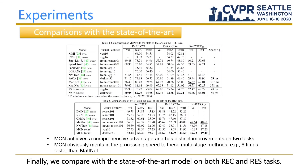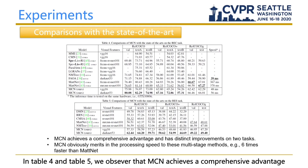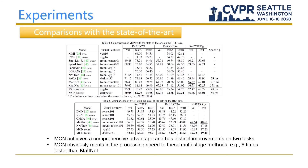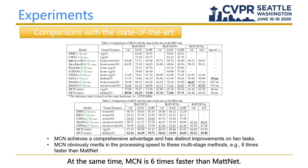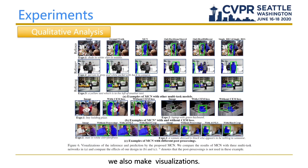Finally, we compare with state-of-the-art models on both REC and RIS tasks. In Table 4 and Table 5, MCN achieves a comprehensive advantage with distinct improvements on both tasks. At the same time, MCN is six times faster than MATTNet. We also provide visualizations, where similar advantages can be qualitatively observed in Fig 6.